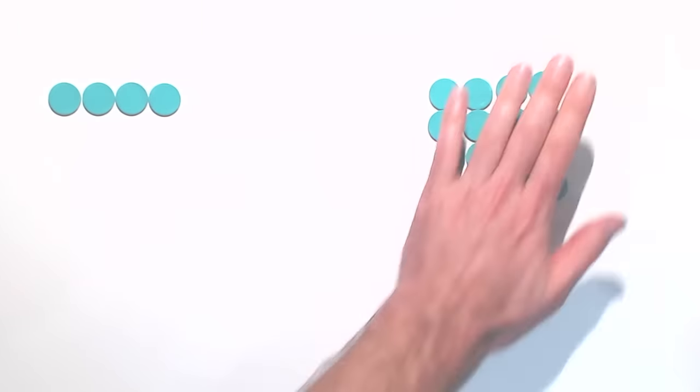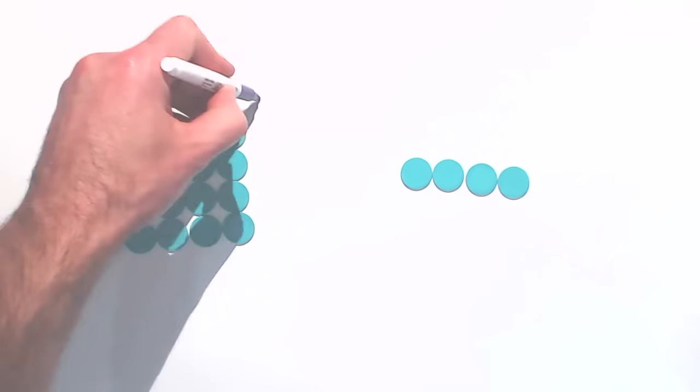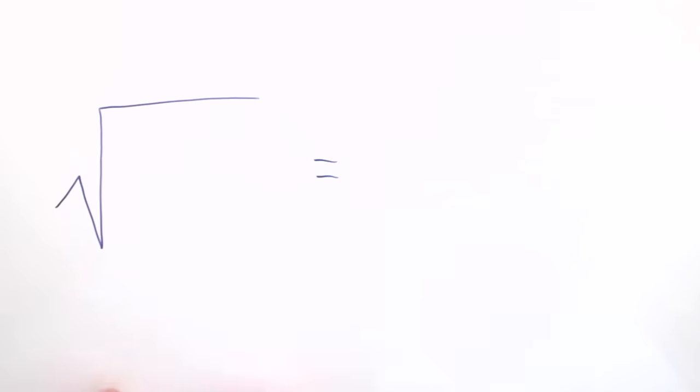Effectively, square root asks the question: what would I need to square to get this answer? The question is asked by this symbol with the upper line extending over the number for which we need to find the square root.